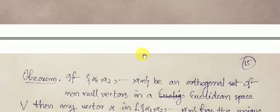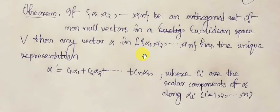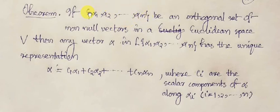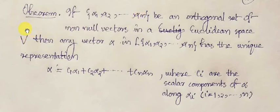Now we shall need to remember a theorem. This theorem concerns a collection of orthogonal vectors — specifically, a set of orthogonal vectors alpha_1, alpha_2, ..., alpha_n from a Euclidean space V.